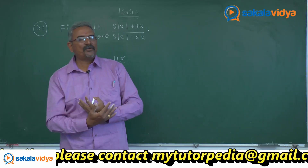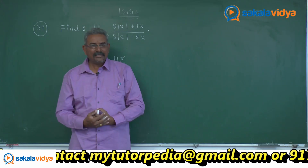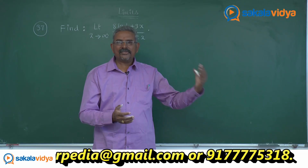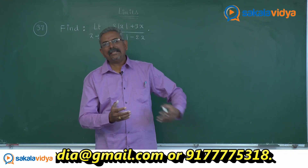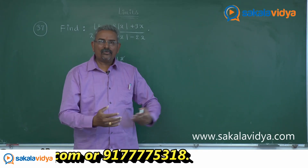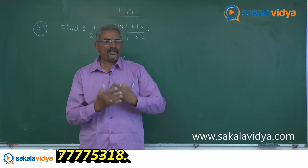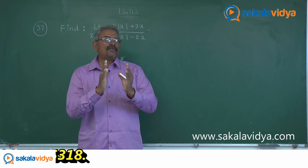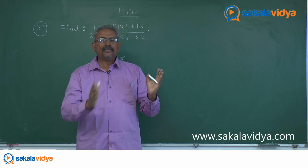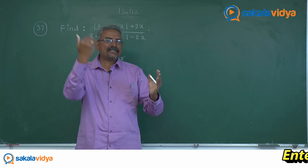The steps to be followed: as x approaches positive infinity, it is obvious that x > 0. Since x > 0, mod x equals x. So now we can write the limit as x approaches infinity, replacing mod x with x and simplifying.